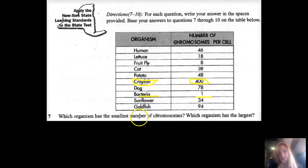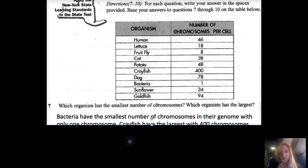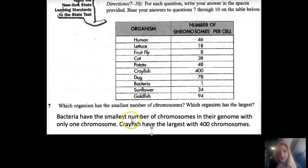Number seven: Which organism has the smallest number of chromosomes? Which organism has the largest? Bacteria have the smallest number of chromosomes in a genome with only one chromosome. Crayfish have the largest with 400 chromosomes. Now, some of you guys may be like, why don't humans have a large number of chromosomes? Well, more DNA doesn't mean more evolved or smarter or more intelligent. Some of our DNA is just never used, or we don't know what it's used for yet. There's also things called junk DNA where it's just repeating segments over and over again. More DNA doesn't mean more evolved.